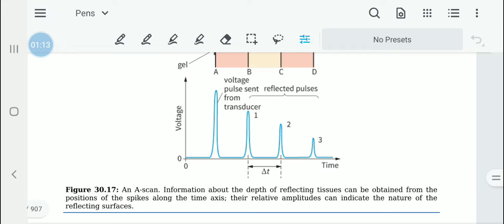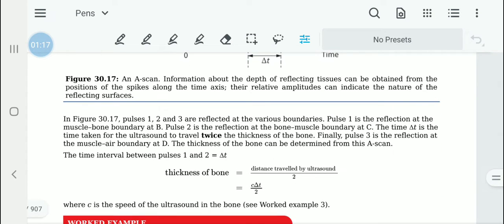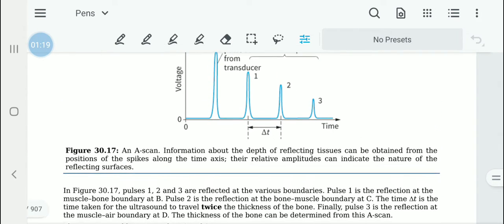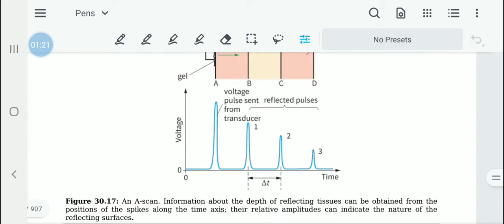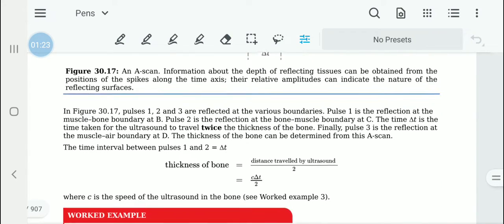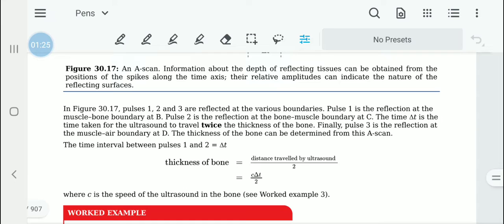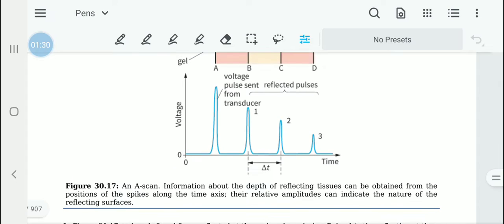There is a time axis and a voltage difference. What happens is pulses 1, 2, and 3 are reflected at the various boundaries. The first spike is the pulse that is sent from the transducer.